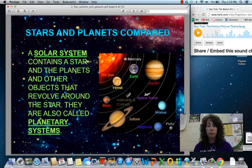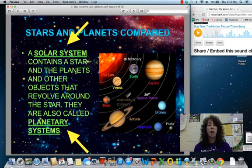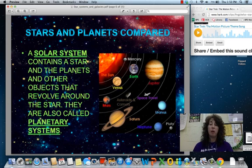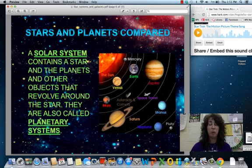So a solar system has certain components. It has a star and it has other planets and other objects that revolve around that star. They are also called planetary systems. You can see our lonely little Pluto is in there. He is no longer considered a planet, but I left him there just for some goodwill.